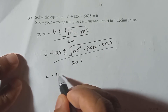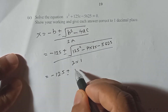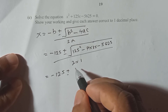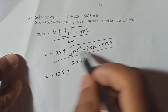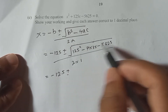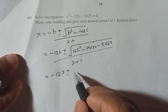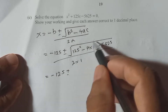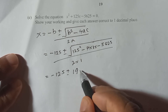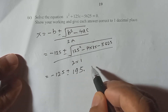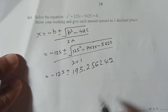After applying and calculating this whole part, the square root value comes out to approximately 195.256242. So we have minus 125 plus or minus 195.256242, all over 2.